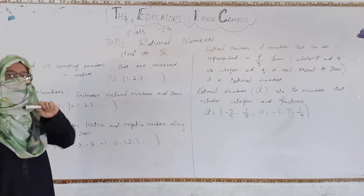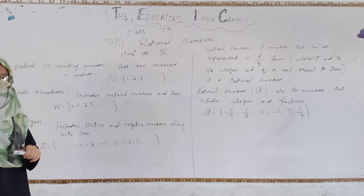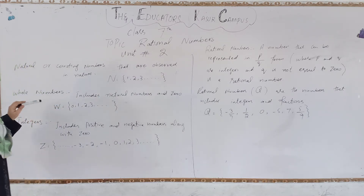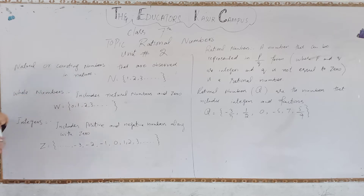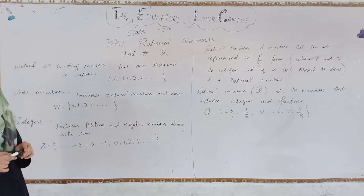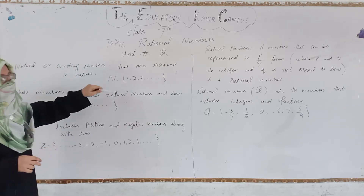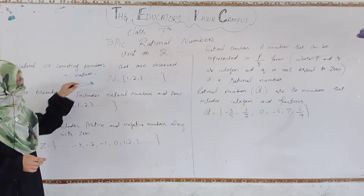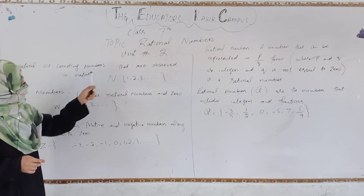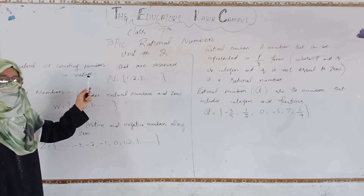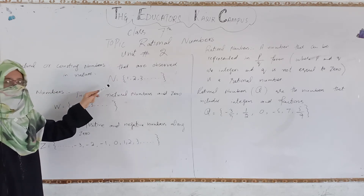To understand rational numbers, first of all we have to list natural and counting numbers. Natural and counting numbers are numbers which we observe in our nature and which we use for counting, like 1, 2, 3, 4, 5, 6, 7, 8, 9 and so on. We denote these with the capital letter N.